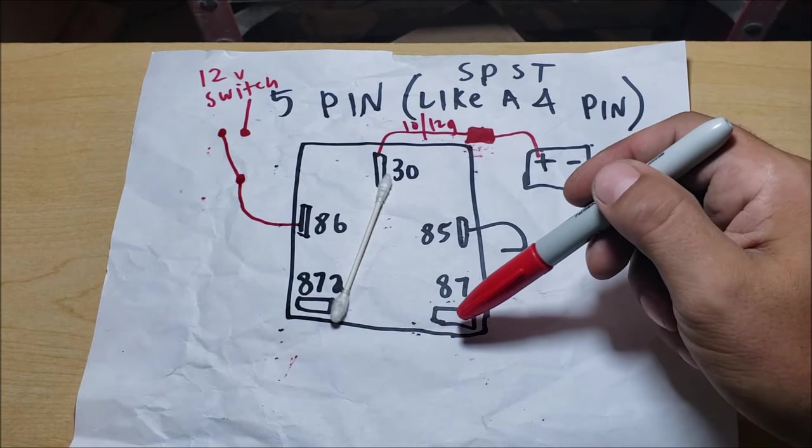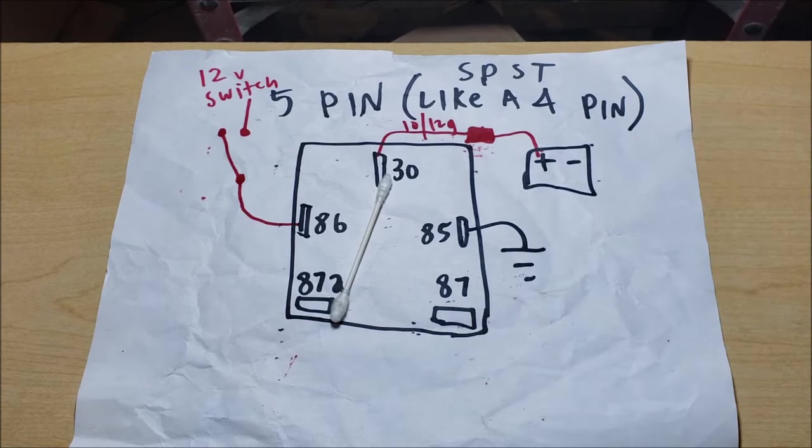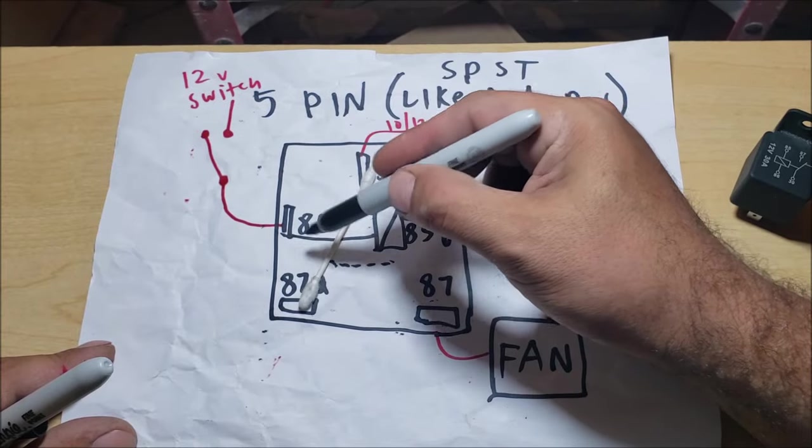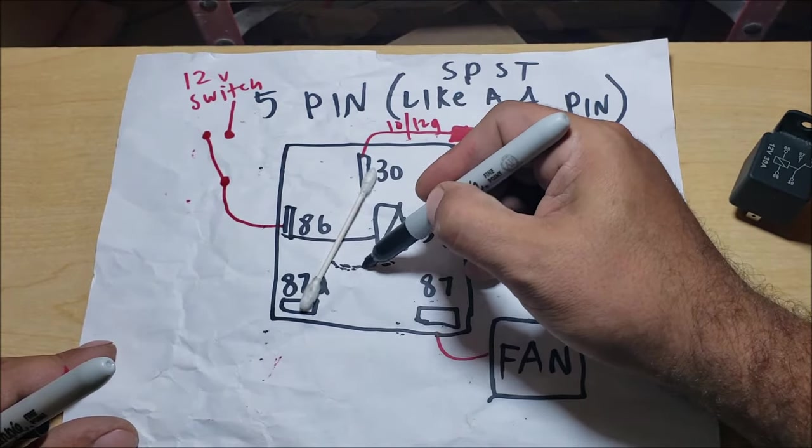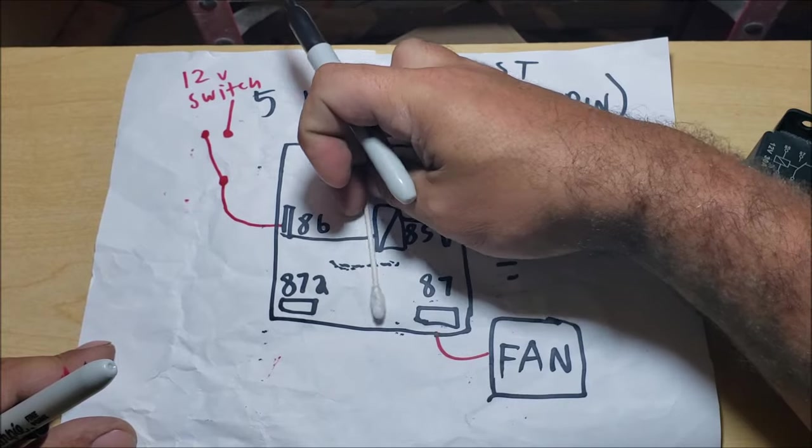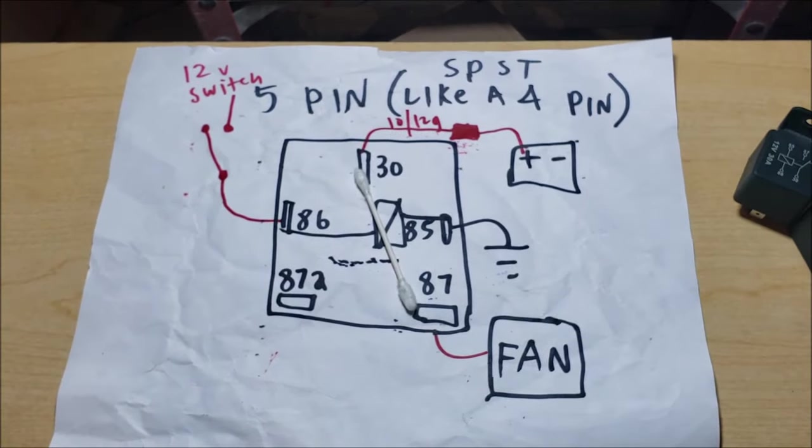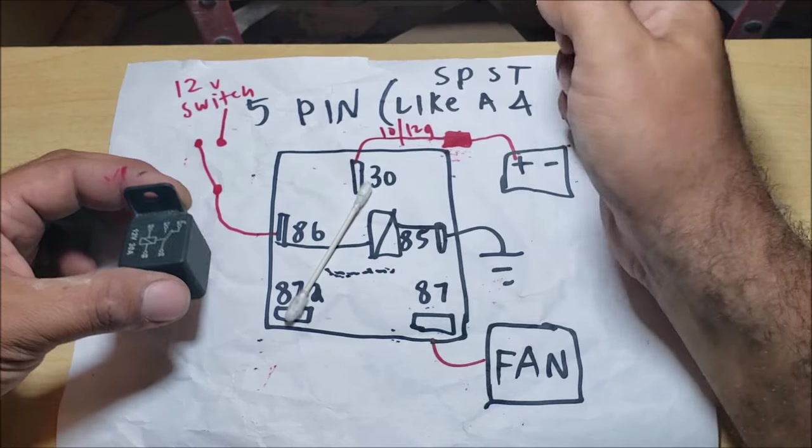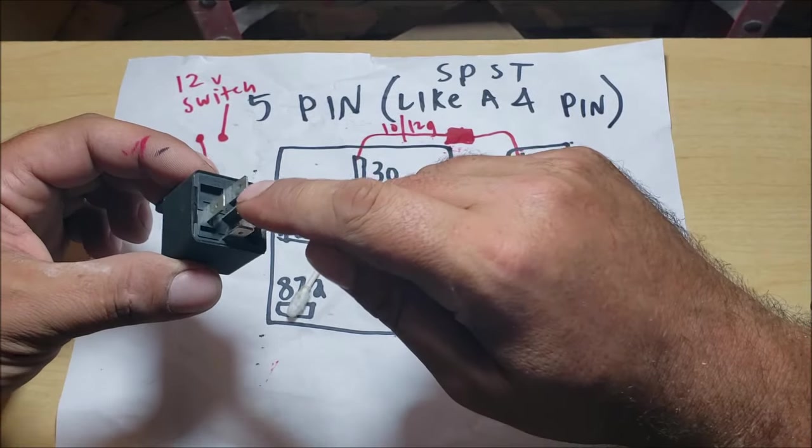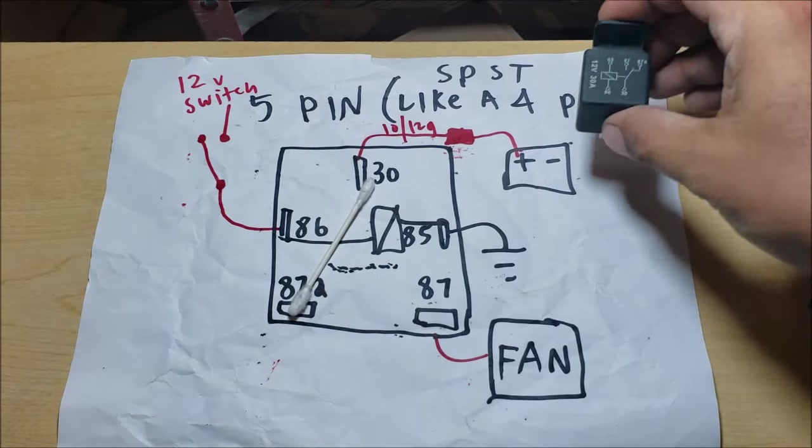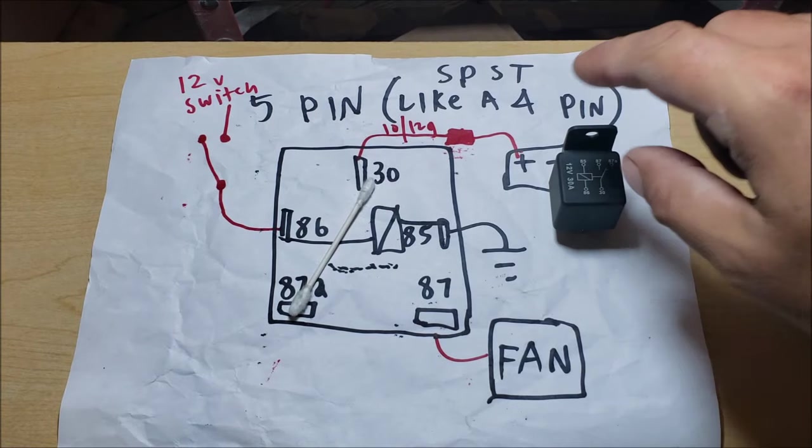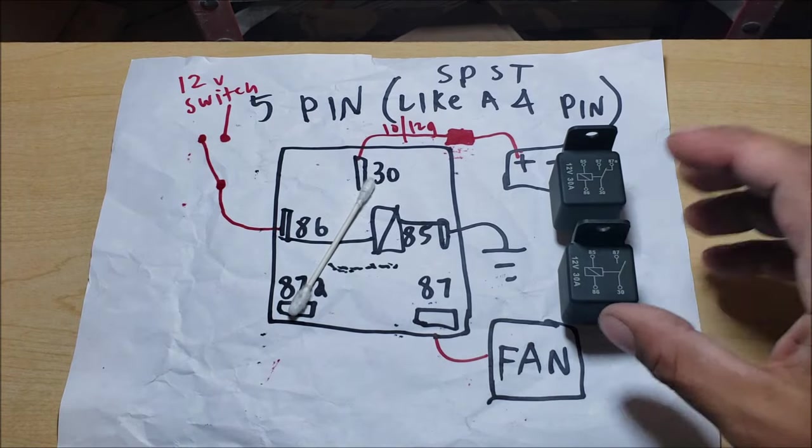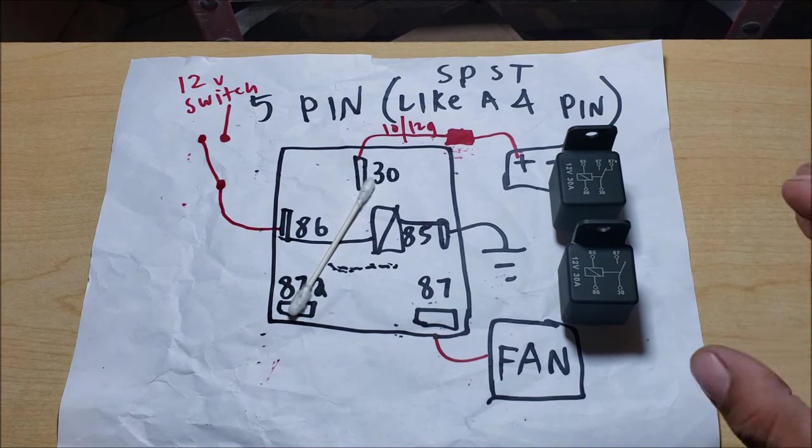So then what they do is they just run the other wire to 87. Then they turn the switch on, runs power through the electromagnet, pulling the switch over here to 87. Now it turns on your fan. Then you turn your fan or lights off and it sends it back over here to 87a and there you go with your little hot terminal. So that's why I do not like running a five pin when you don't need it. It's so pointless. I don't understand why so many people do it, they continue to do it and they'll do it to the end of time.